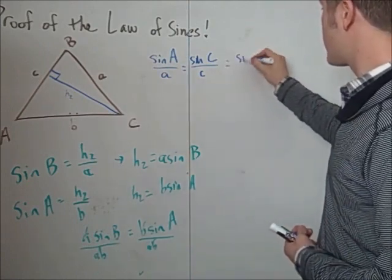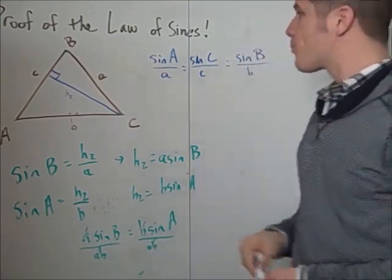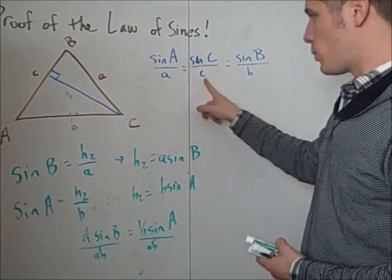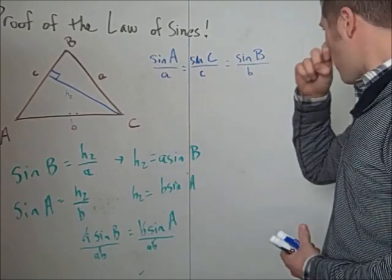This is sine B over b as well. So the law of sines states that the sine of A over a is equal to the sine of C over c is equal to the sine of B over b.